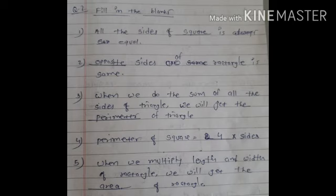Fourth one, perimeter of square equals to dash multiply sides. Okay? Square ka perimeter find karne ke liye, hum side ko kis se multiply karenge? Four se. Because square ki four side hoti hai and all the sides are same.